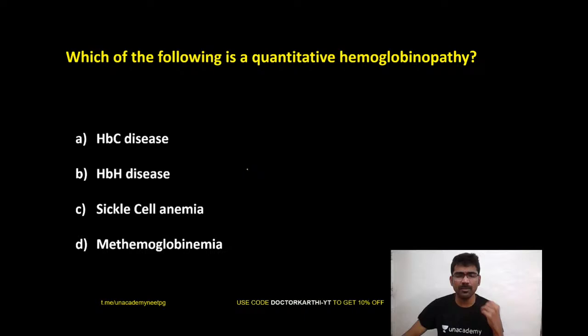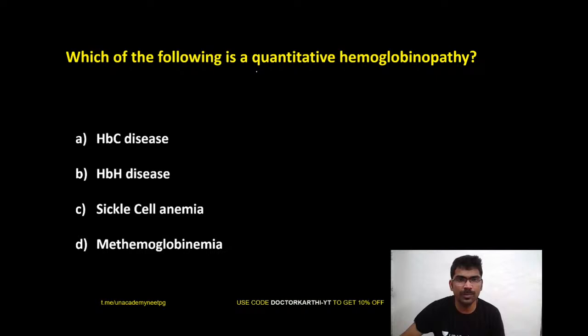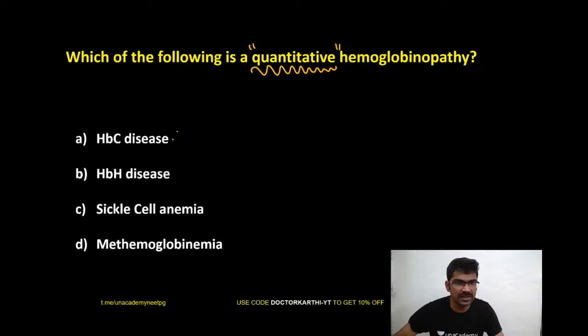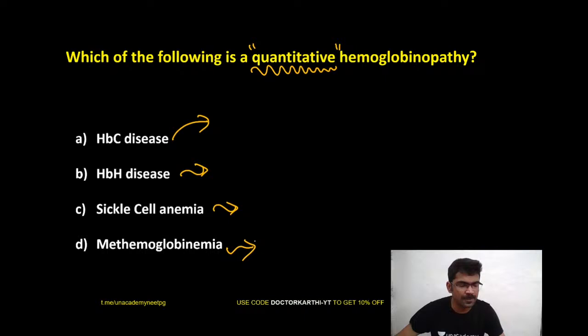Let us start the MCQs on hemoglobinopathies. Question 1: Which of the following is a quantitative hemoglobinopathy? The options are: A) HbC disease, B) HbH disease, C) Sickle cell anemia, D) Methemoglobinemia. Which one is a quantitative hemoglobinopathy?